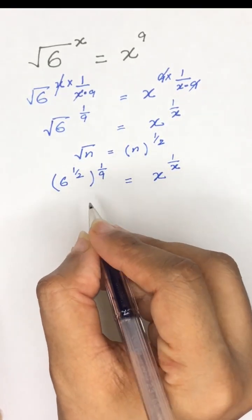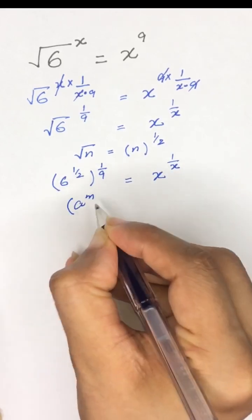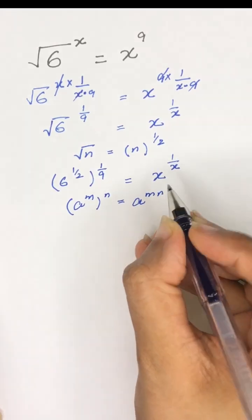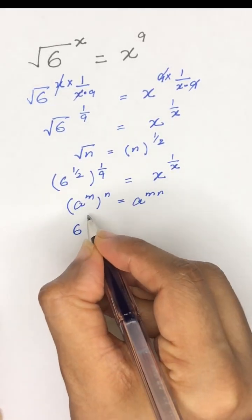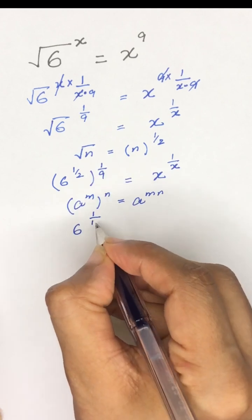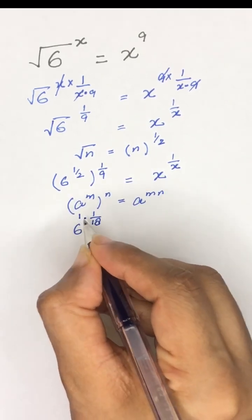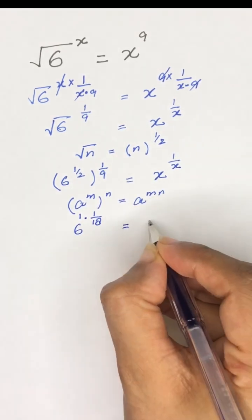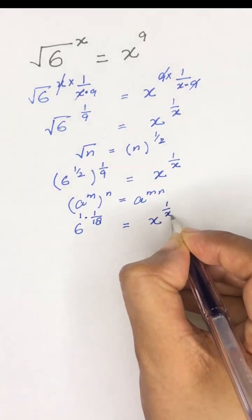Now we will use the exponential rule: a to the power m, whole power n, is equal to a to the power mn. So it will become 6 to the power 1 divided by 9 times 18. We can write 1 divided by 18 as 1 times 1 divided by 18, which is the same as 1 divided by 18. And the right-hand side is x to the power 1 divided by x.